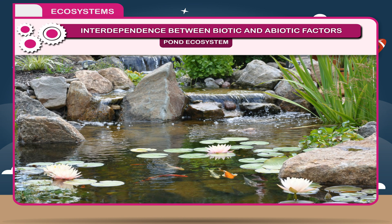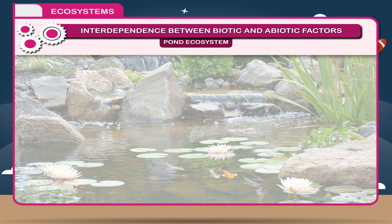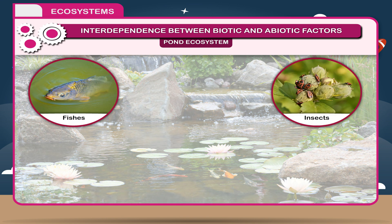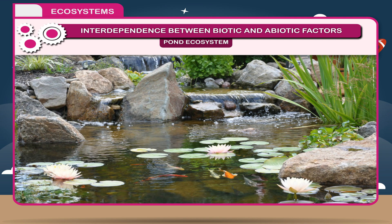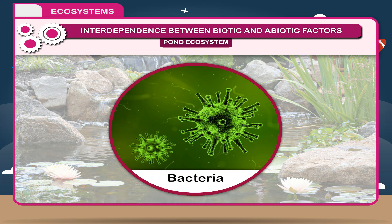The fauna or animals found in the ecosystem include small and varied fishes, insects, snakes, frogs, snails, etc. The smaller ones feed on plants whereas the larger organisms feed on small fishes and insects. All biotic factors of the pond ecosystem produce organic waste. The dead and decaying organic matter is decomposed by decomposers like bacteria.